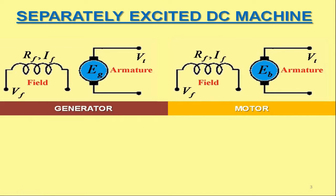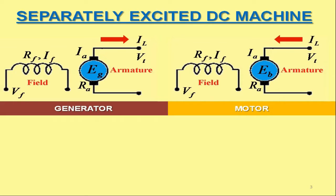VT is the output terminal voltage of the separately excited DC generator, while in case of DC motor VT is the input terminal voltage. The armature resistance is RA and the armature current is IA. IL is the output current from the separately excited DC generator or input current to the DC motor as the case may be. The directions of current IL are represented by red arrows. The current IL would be identical to the armature current IA for both separately excited DC generator as well as DC motor.